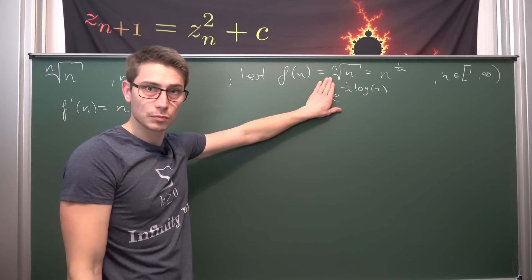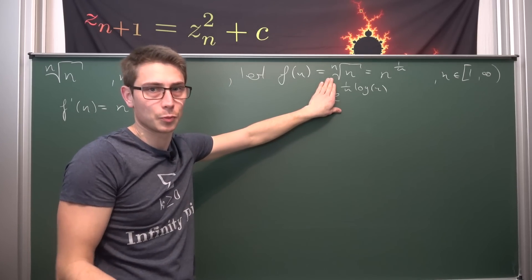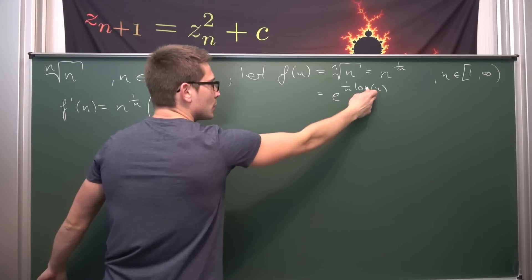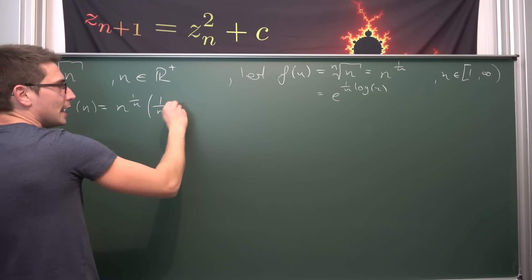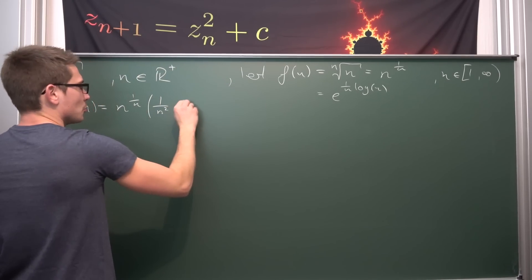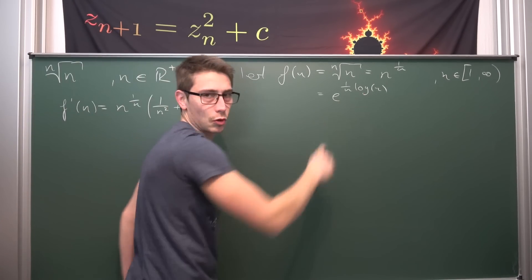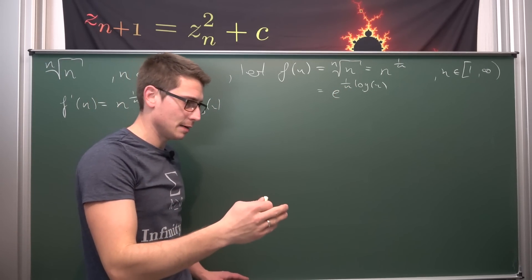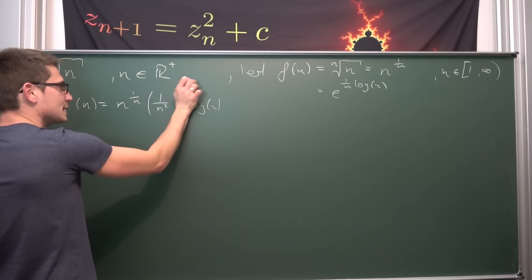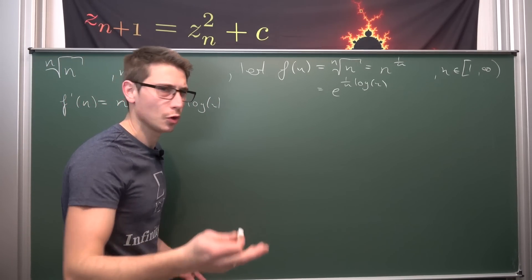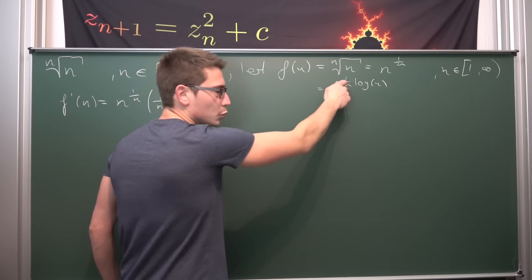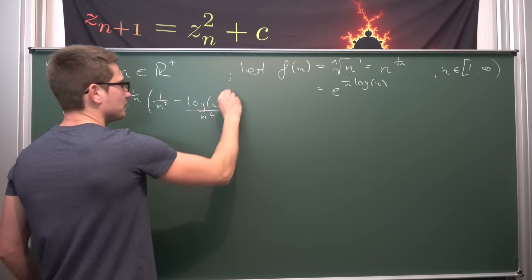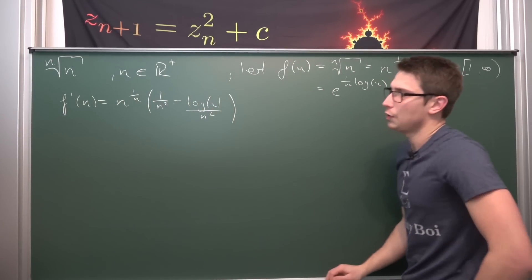For the inner derivative, we have a product, so we use the product rule. Differentiating log of n gives 1 over n, so we get 1 over n squared. Then we leave log of n as is, giving plus log of n. By the way, this is the natural log. Then differentiating 1 over n: written as n to the negative 1, the power rule gives negative 1 times n to the negative 2, meaning negative 1 over n squared. This right here is the first derivative of our function.